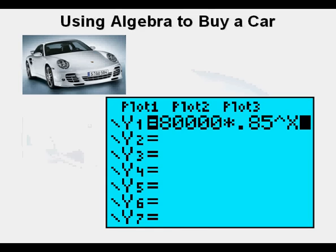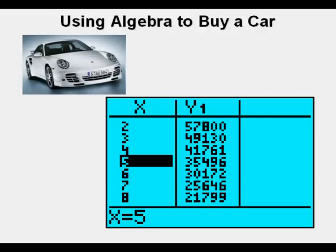Here is the exponential function that can be used to model the situation. The .85 represents the depreciation rate of 15%. And of course, the $80,000 in the function represents the beginning value of the car. From here, go to the table view by pressing 2nd, then graph to see the value of this car at 5 years. This value of less than $36,000 lets you know that $45,000 is not a competitive price for this car after 5 years, although it would be a very good price for a 3-year-old car.